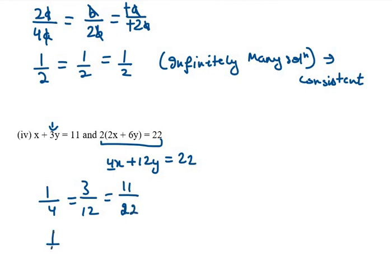The first ratio a1/a2 is 1/4, the second ratio b1/b2 is 3/12 which equals 1/4, and the last one c1/c2 is 11/22 which equals 1/2. You can see that the last one is not equivalent to the first two. So this condition is again inconsistent and it has no solution to it.